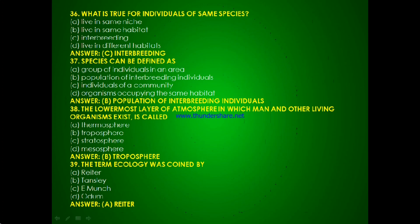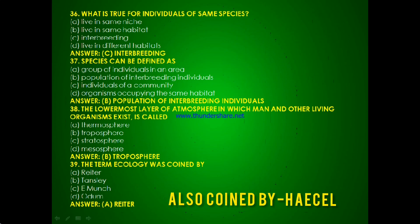Question 36: The lowermost layer of atmosphere in which man and other living organisms exist is called — thermosphere, troposphere, stratosphere or mesosphere? The answer is troposphere. Question 37: The term ecology was coined by — Reiter, Tansley, E. Munach or Odum? The answer is A, Reiter.